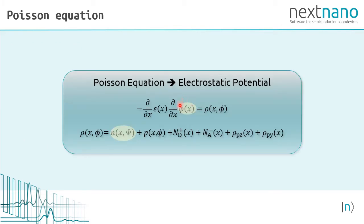The Poisson equation calculates the electrostatic potential from the charge density. The charge density consists of electron density, hole density, density of donors, acceptors, a fixed piezoelectric and a fixed pyroelectric charge density.